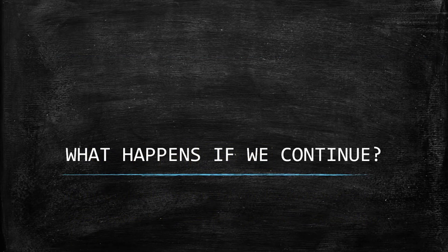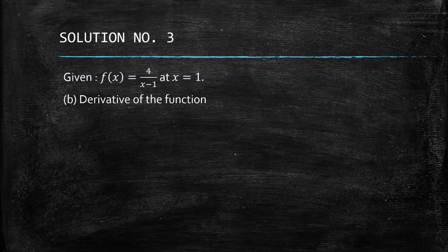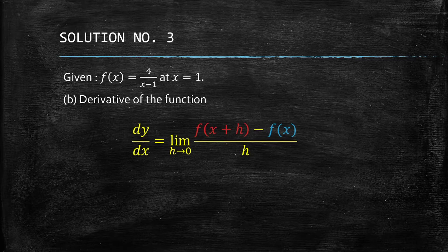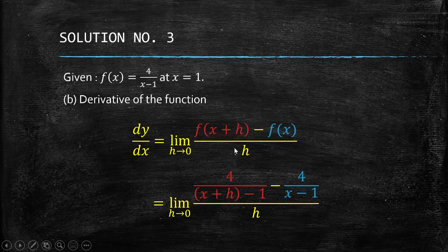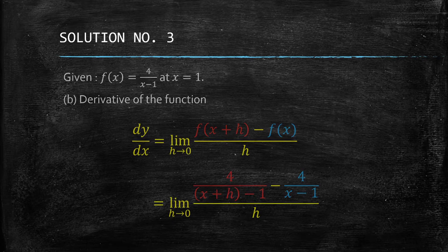But what happens if we continue? Can we find the derivative, the tangent line equation, and the normal line equation? Let's proceed using the definition of the derivative. We substitute f(x) = 4/(x − 1) and f(x + h) = 4/((x + h) − 1) into the limit definition, then find the LCD.